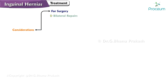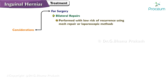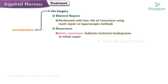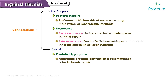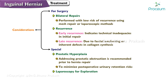Considerations for surgery: Bilateral repairs can be performed with a low risk of recurrence using mesh repair or laparoscopic methods. Early recurrence often indicates technical inadequacies in the initial repair, while late recurrences may be due to fascial weakening or inherent defects in collagen synthesis. Addressing significant prostatic obstruction is recommended prior to hernia repair to minimize postoperative urinary retention risk. Laparoscopy is ideal for assessing bowel viability if there is suspicion of strangulation after hernia reduction.